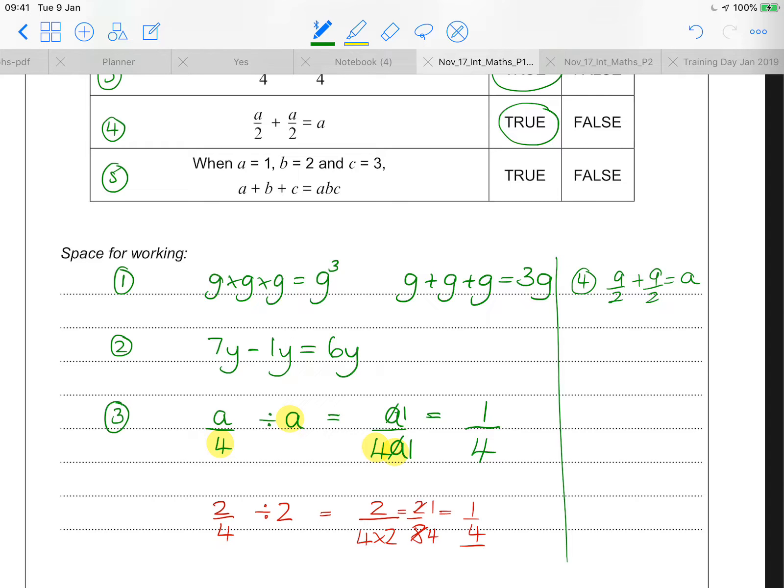And then in question 5, the last one. When a equals 1, b equals 2, and c equals 3, a plus b plus c would be the same as 1 plus 2 plus 3, which makes 6. abc means a times b times c. 1 times 2 times 3, which equals 6. Up here in the question, they said that they would be equal. Down here in the answers, I've actually got the same amount. So that one's true as well.